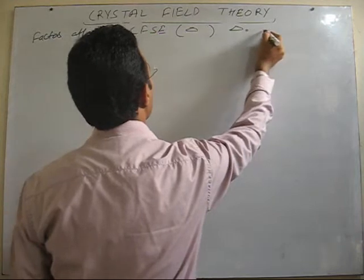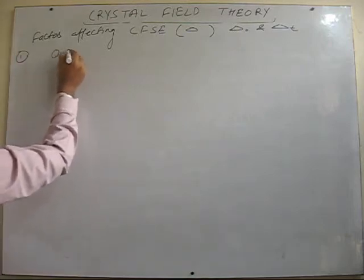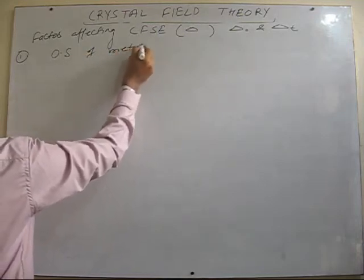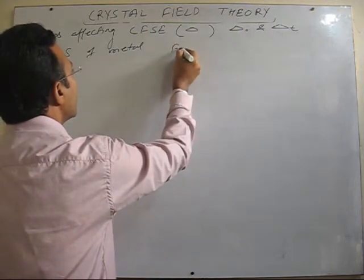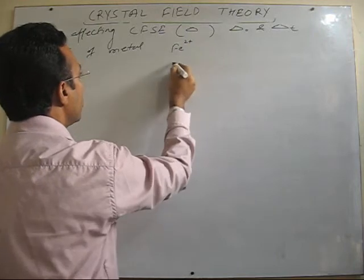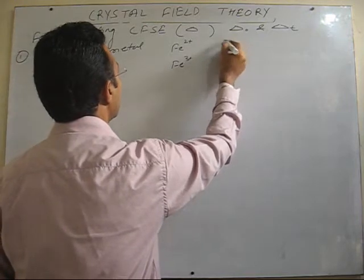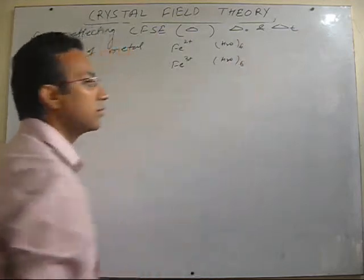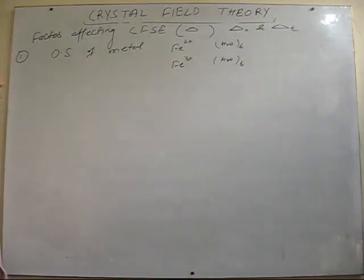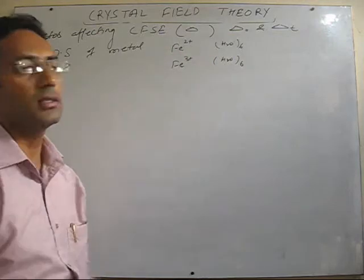In case of octahedral we write delta O, in case of tetrahedral we write delta T. The first factor is the oxidation state of the metal. Suppose all other factors are the same, but the oxidation state of the metal is different — for example, a complex of Fe²⁺ and a complex of Fe³⁺. In both cases the ligand is water and the coordination number is 6, so all other factors are kept constant — nature of ligand, number of ligands, and the central metal — but the oxidation state is different.